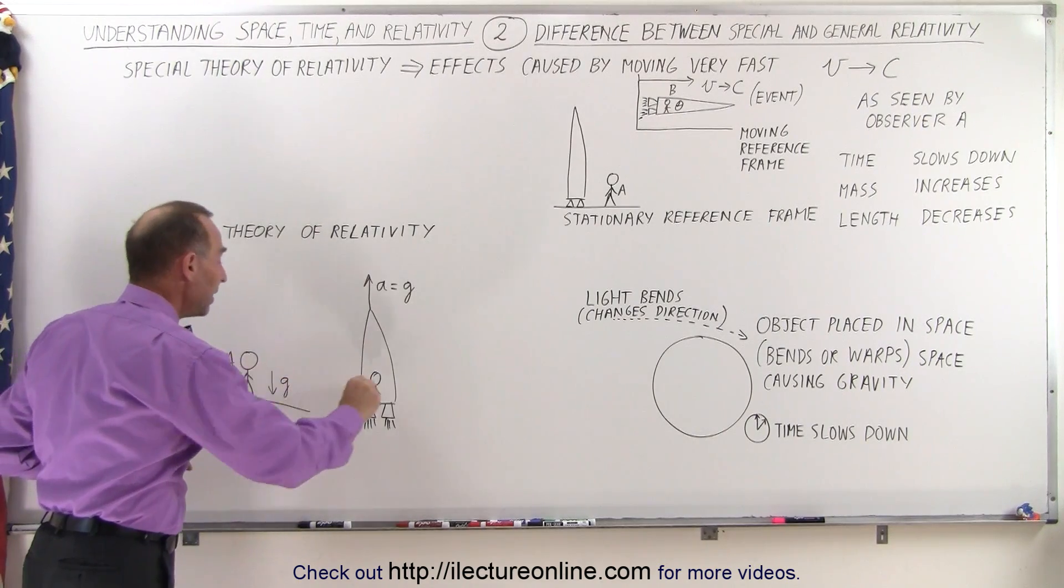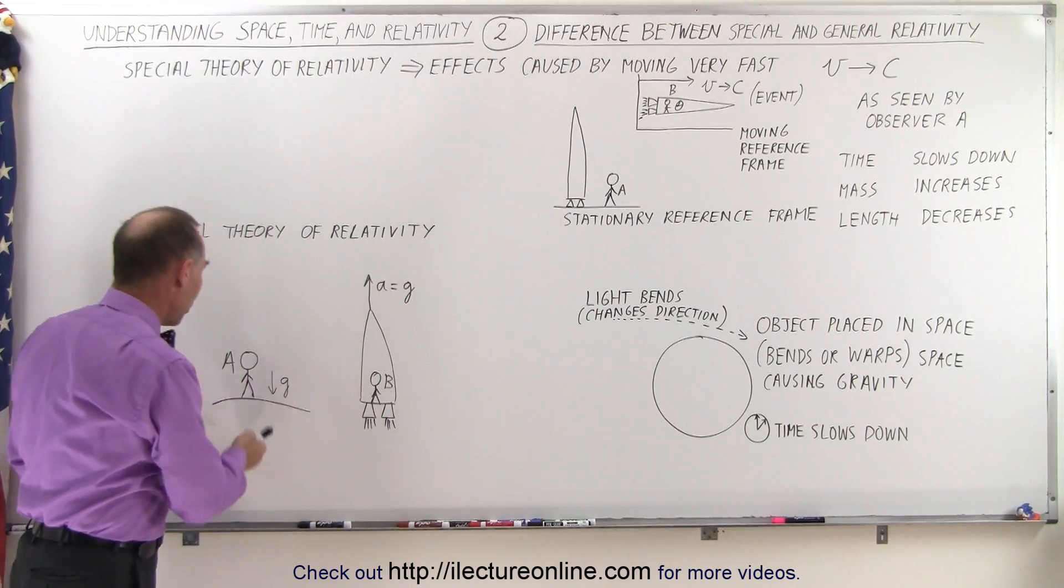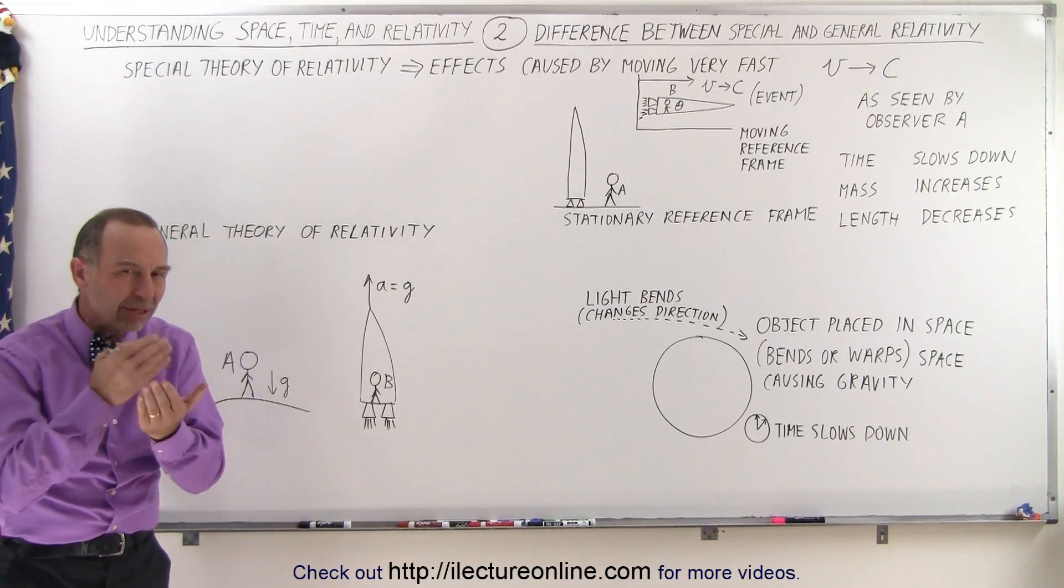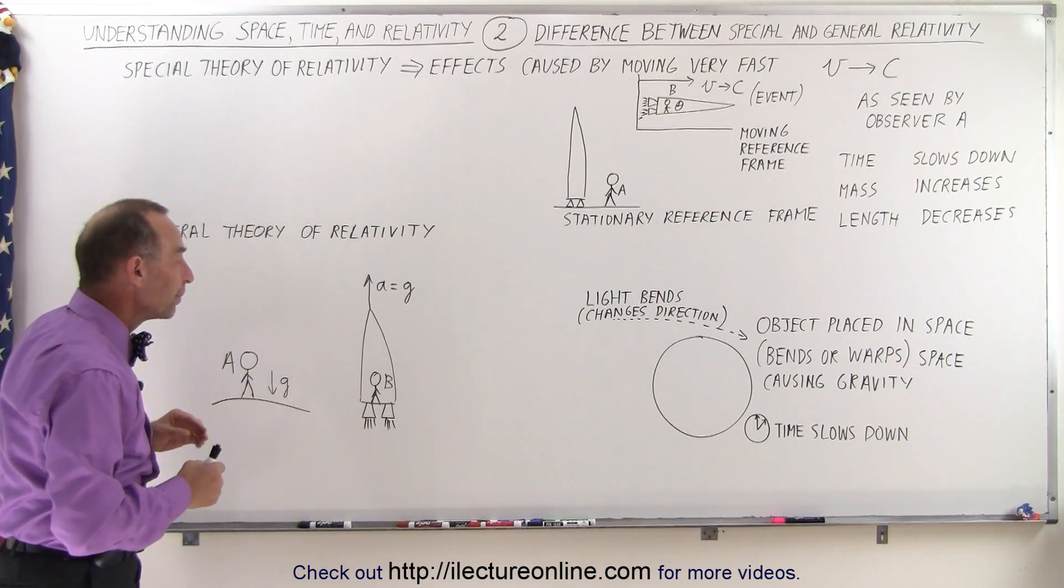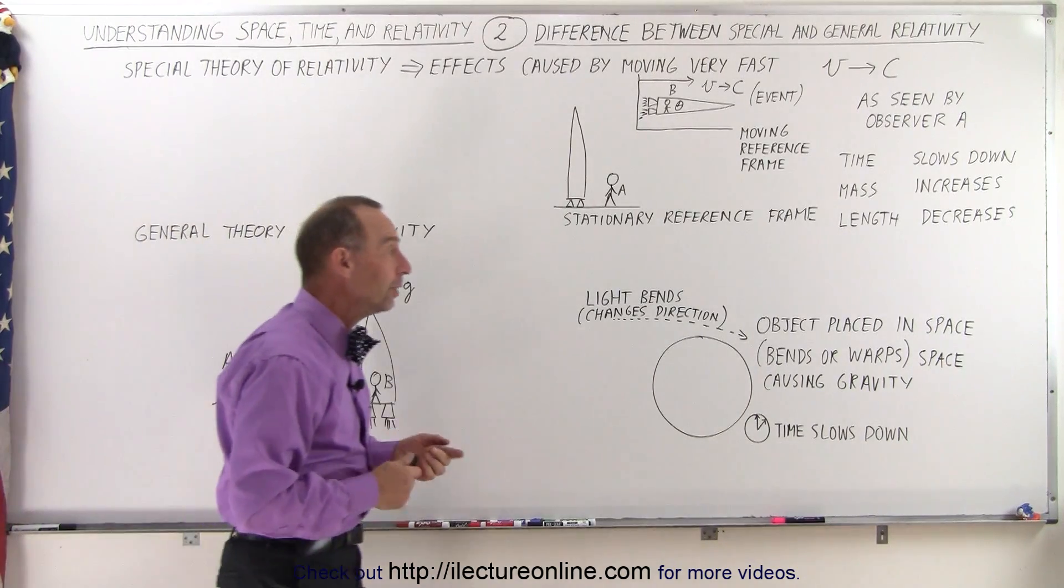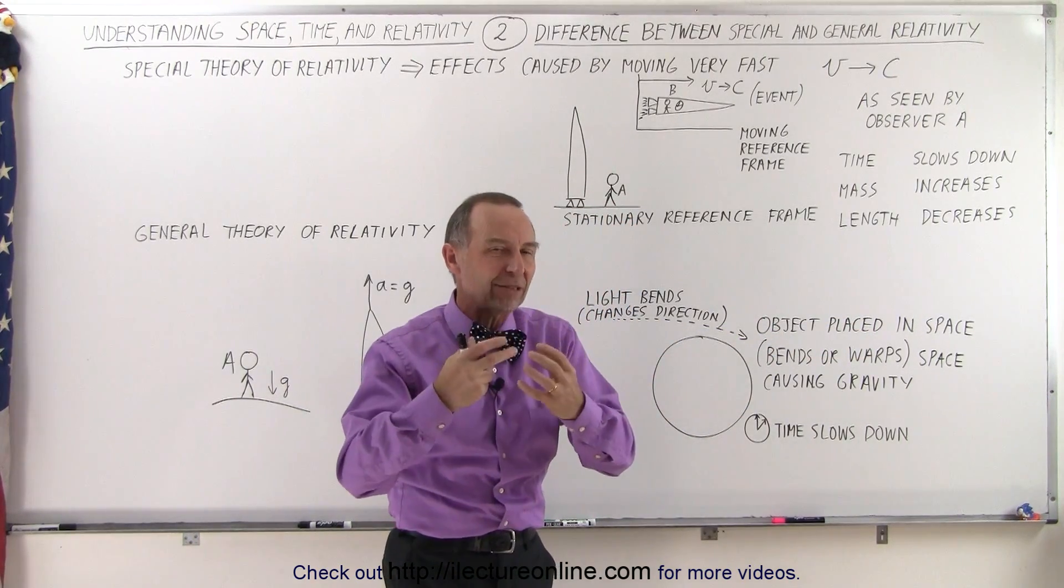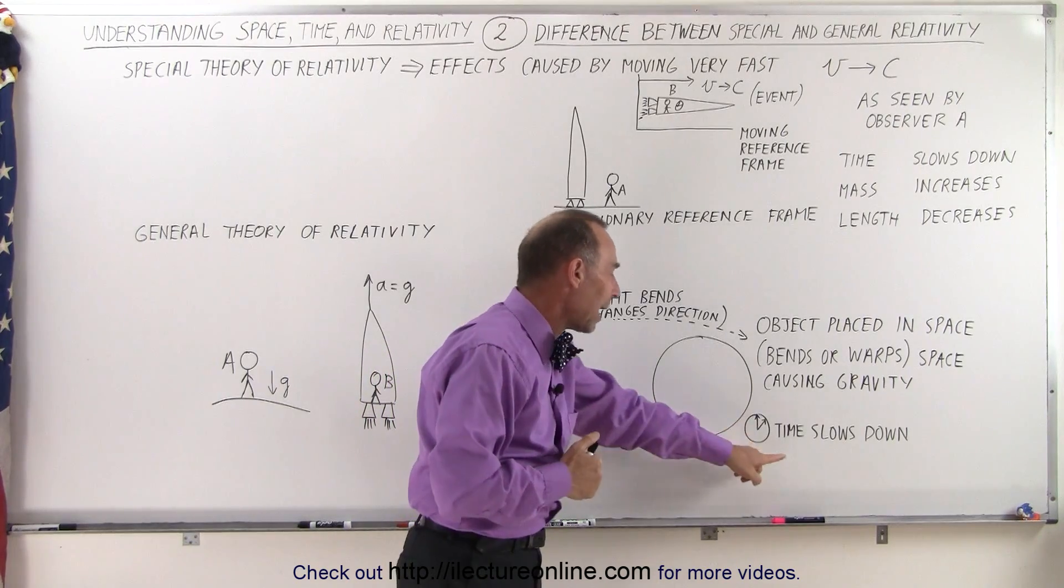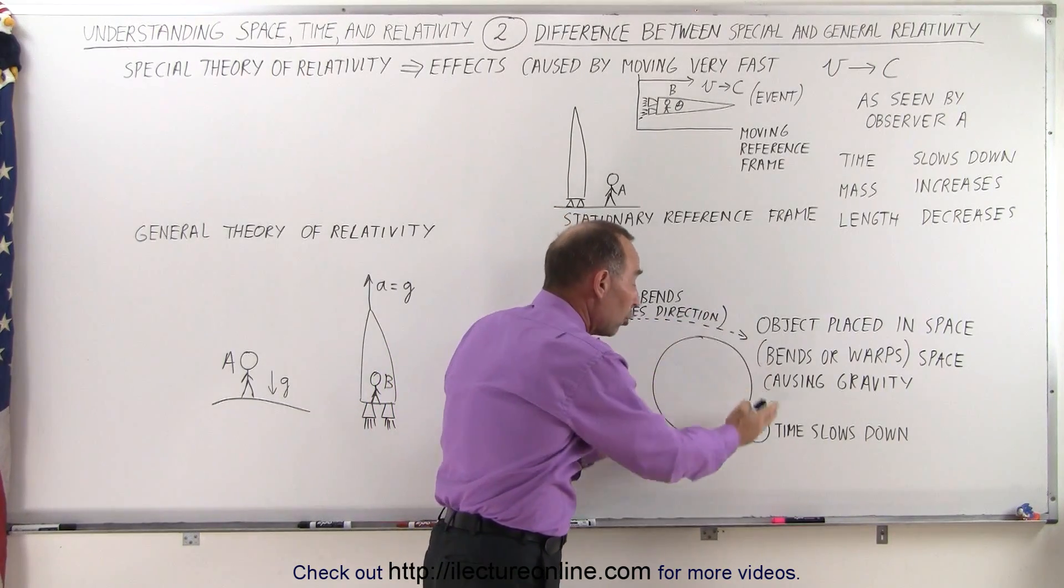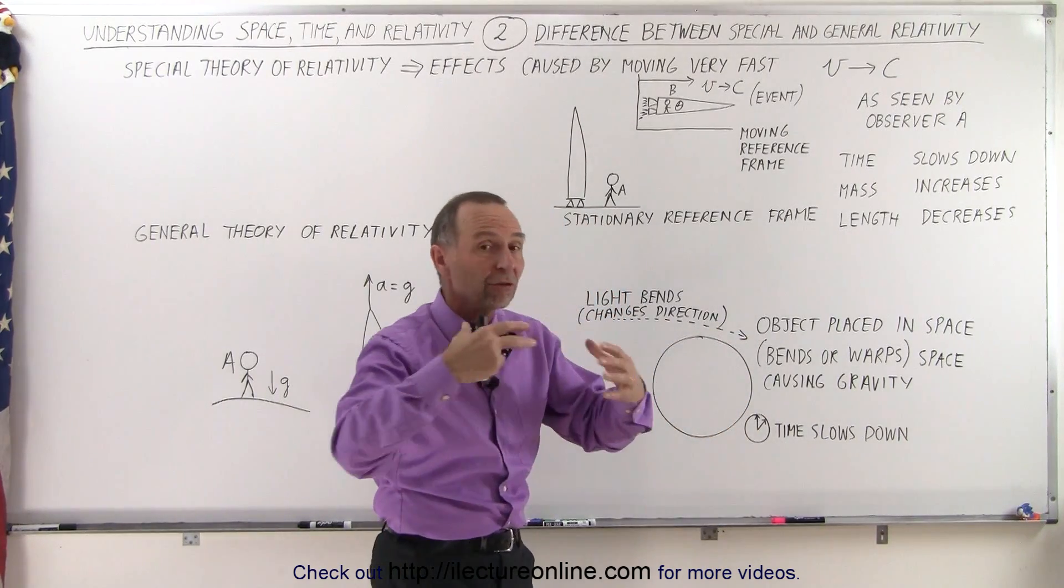So if this is Observer A and this is Observer B, any experiment that they would do on board the spaceship here or on the surface of the Earth, we would not be able to tell any difference whatsoever, and that's the basic concept of the general theory of relativity. The result of that is there's several things that we then begin to observe. First of all, any object that seems to be placed in space seems to bend or warp space, causing the effect of gravity. Secondly, any object that's close to a large object that then causes gravity in space seems to also slow down time. So for example, if you're close to a large object like the Earth or the Sun or a galaxy where the gravitational force is greater, time seems to slow down.